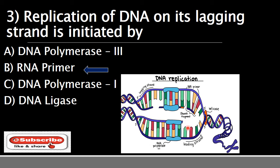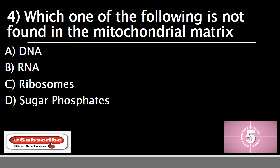DNA replication is a process by which DNA makes a copy of itself during cell division. Primers are short strands of RNA synthesized by an enzyme called primase. If you see a diagram, the lagging strand runs in the opposite direction and must be replicated backwards, that is from 3-prime to 5-prime.